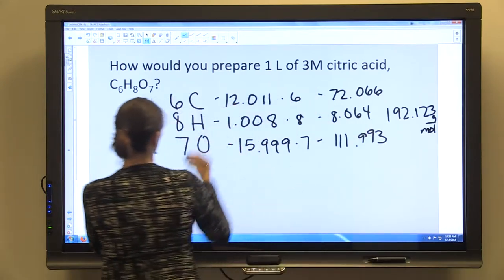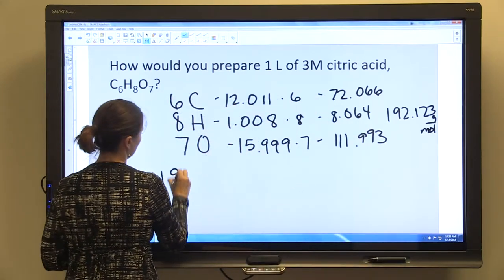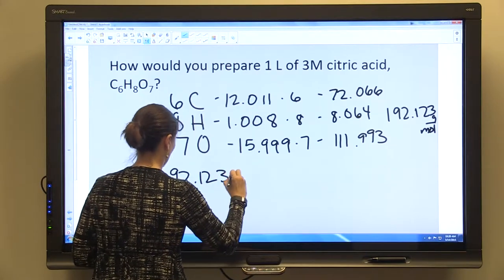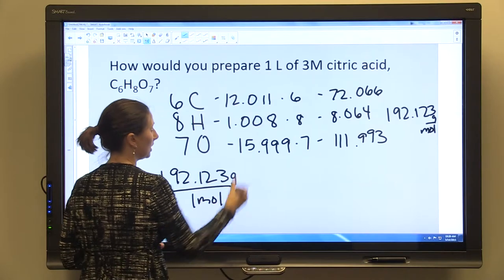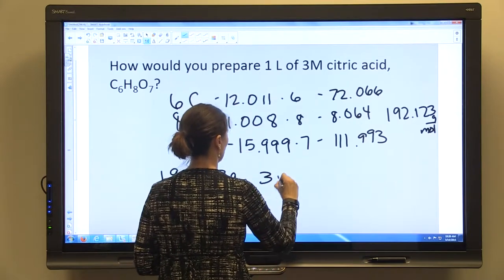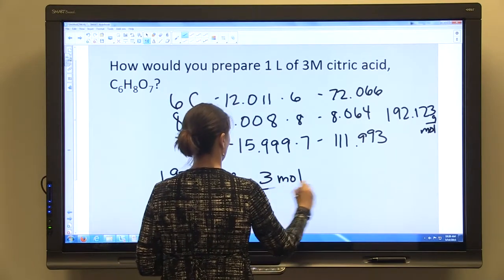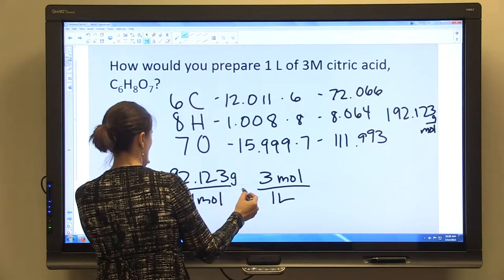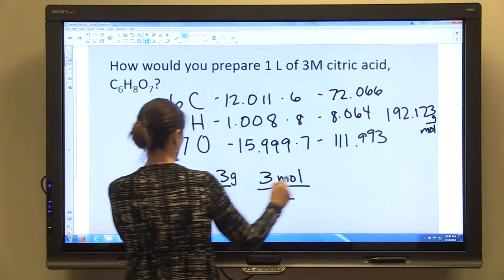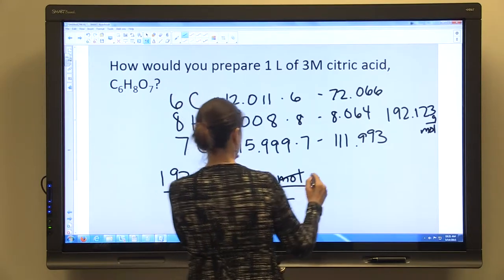We're going to get 192.123 grams per mole. Now we know that 192.123 grams is in one mole, and we need three moles per one liter. So the moles are going to cancel, but we'll multiply this out.